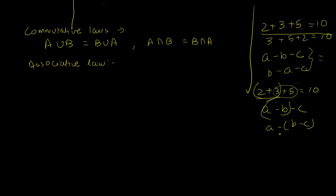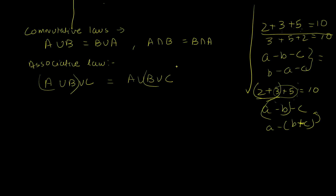In set theory, association works for both union and intersection: (A union B) union C equals A union (B union C), and (A intersection B) intersection C equals A intersection (B intersection C). Both union and intersection are associative in set theory.